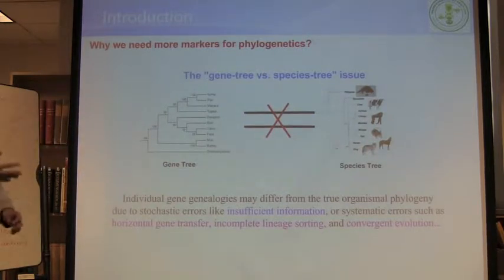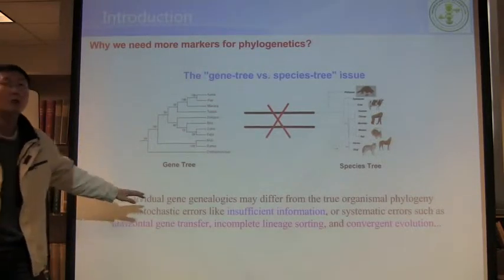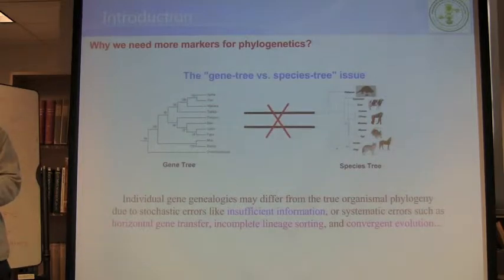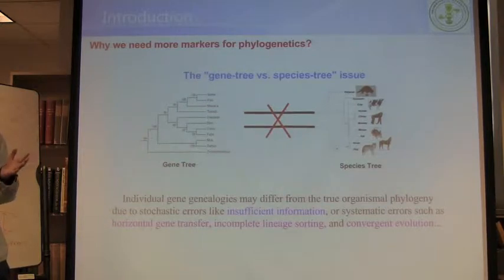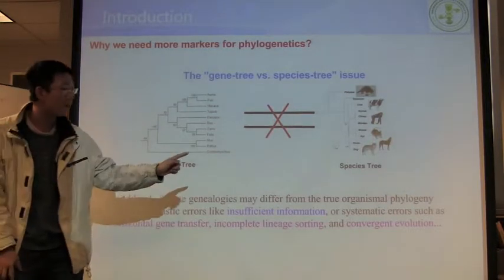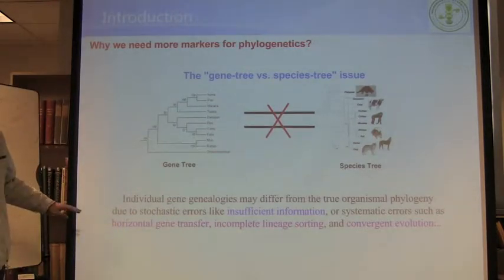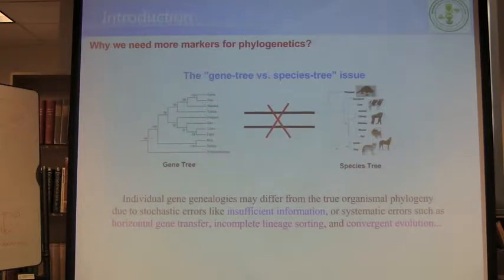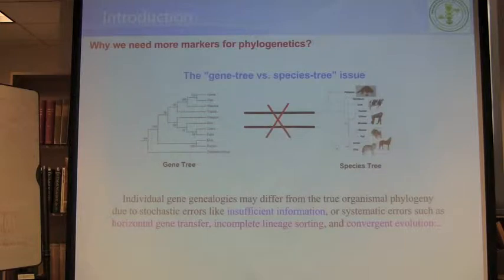Why does this happen? Because sometimes gene trees don't match the species tree — like a random error where you didn't have enough sequence, so it's too short and your gene tree differs from the species tree. You can just pick longer sequences to resolve that. But in many cases, there are systematic errors such as horizontal gene transfer, which happens very often in bacteria, incomplete lineage sorting, which is very common in amphibian markers, and even convergent evolution.